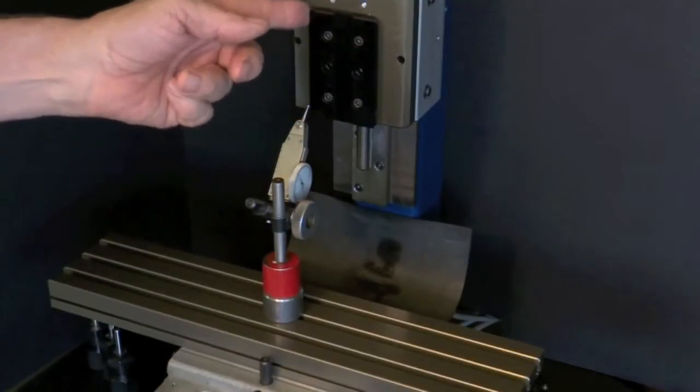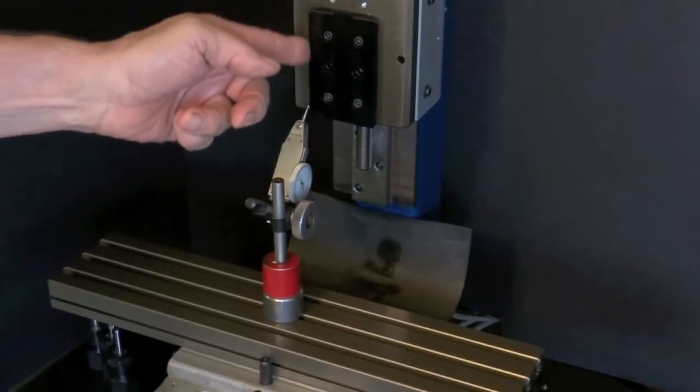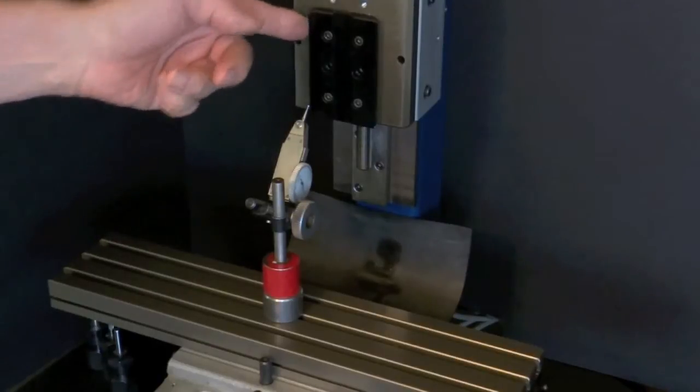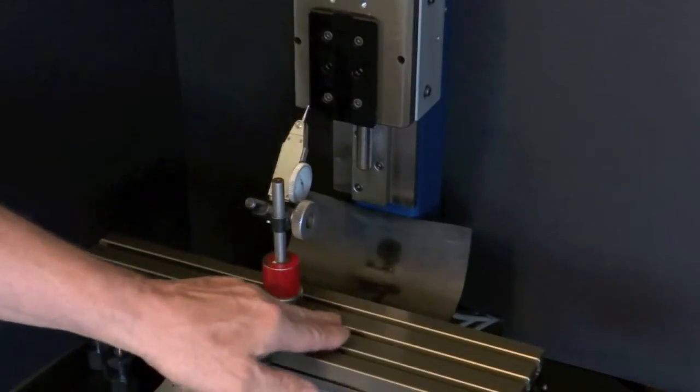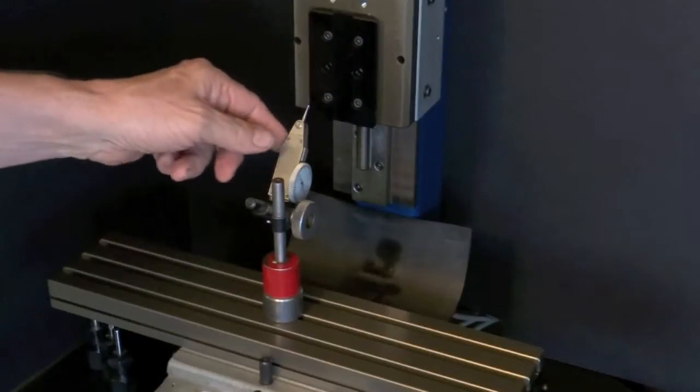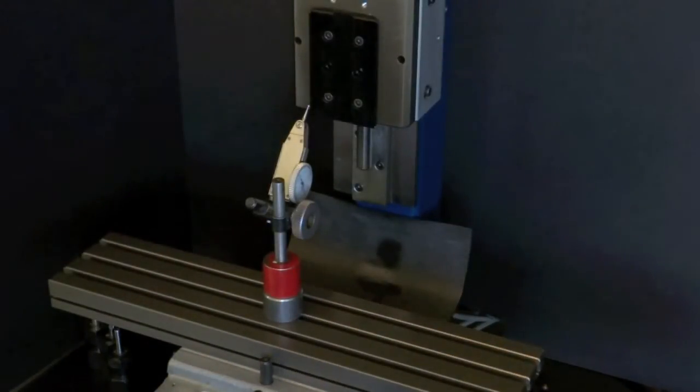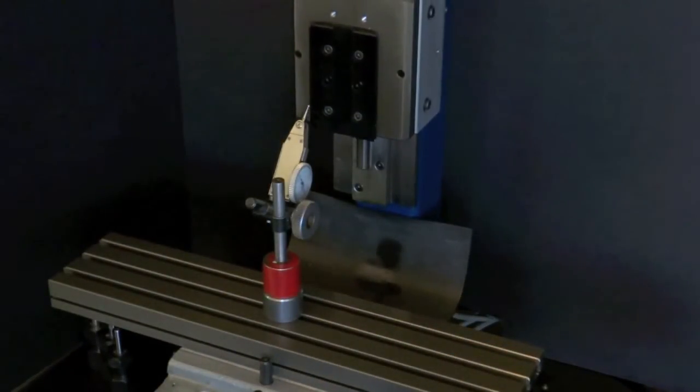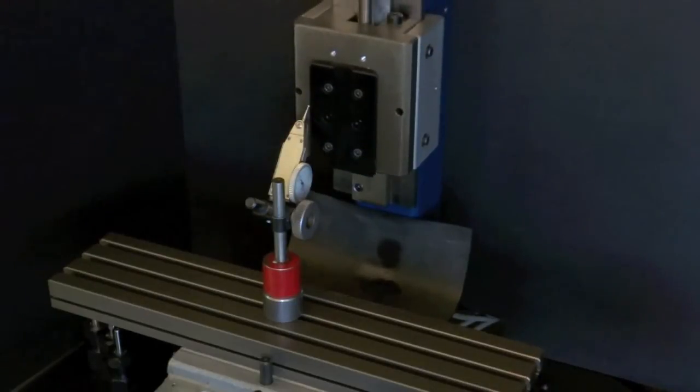There's an edge here that you can touch with the dial indicator right here, this little edge. You can put your indicator on there. I've got a piece of steel that I bolted to the table, and then we can go up and down like so.